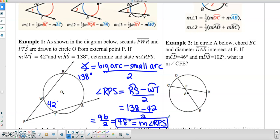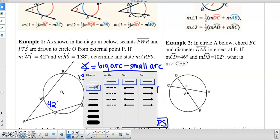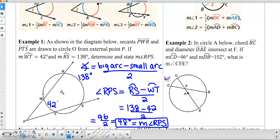So example 2. In circle A below, chord BC and diameter DAE intersect at F. If the measure of arc CD is 46 degrees, so I'm going to label this here as 46 degrees, and the measure of arc DB is 102, what is the measure of angle CFE?